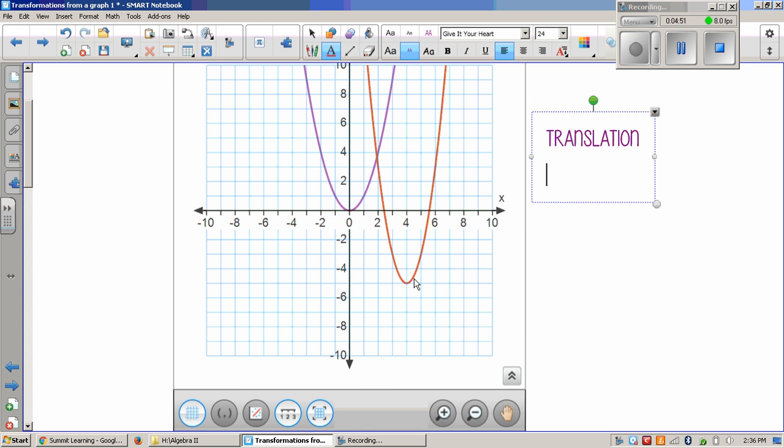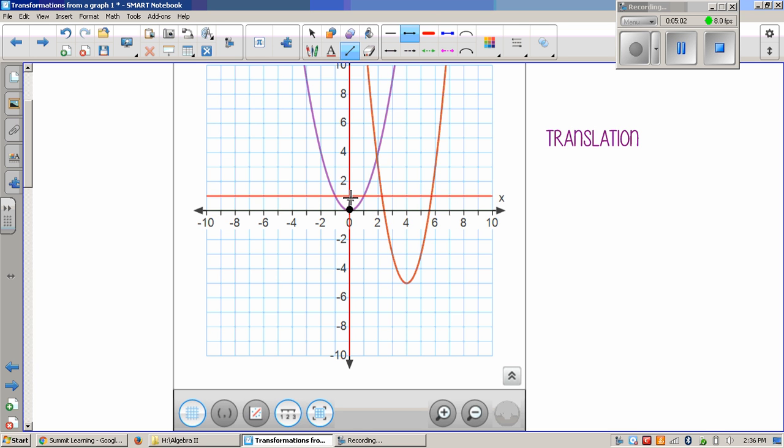So, we won't do a reflection here. But it does look like we have a dilation because, again, if I look, here's my vertex, and then the next nice point looks to be right here on my original graph. Now, if I go up one, right one.